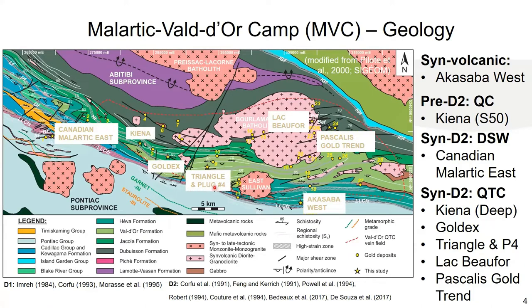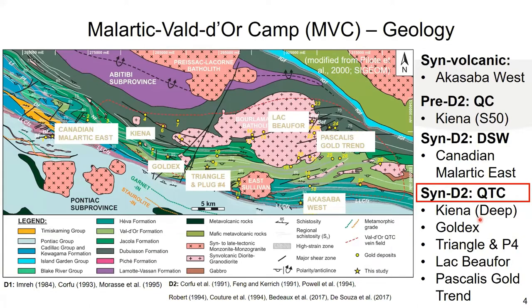We have nine different ore bodies that we've received samples from, which we can characterize into four different mineralization styles in space and time during an orogenic cycle. These include: a syn-volcanic-dominated subtle copper-gold mineralization; a pre-D2 highly deformed quartz-carbonate vein set hosting gold; a disseminated stockwork initiated during the major north-to-south shortening event (D2) in and around the township of Malartic; and our quartz-tourmaline-carbonate veins, the textbook picture-perfect example of orogenic gold mineralization globally — and those are the veins I'll focus on today.